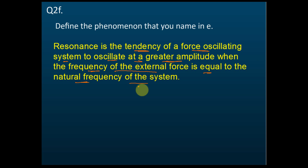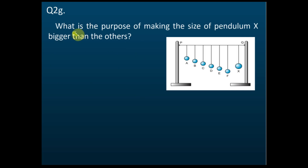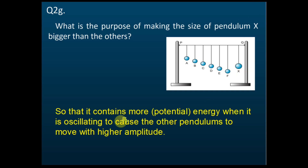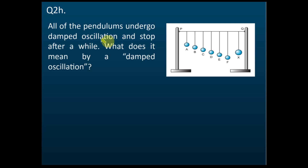This is a very common exam question. What is the purpose of making pendulum X bigger than the others? Because if the mass of the driver pendulum is higher, it contains higher mechanical energy. When it has higher mechanical energy, it can make the other pendulums oscillate with bigger amplitude so that we can see the results more clearly. The bigger the mass, the higher the mechanical energy contained, causing the other pendulums to move with higher amplitude.